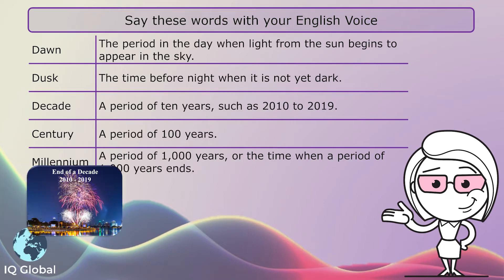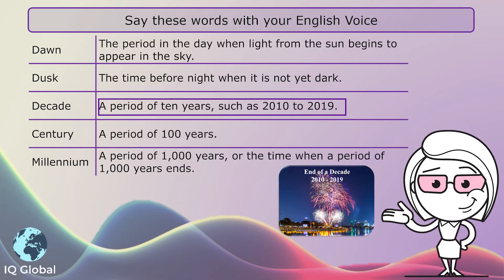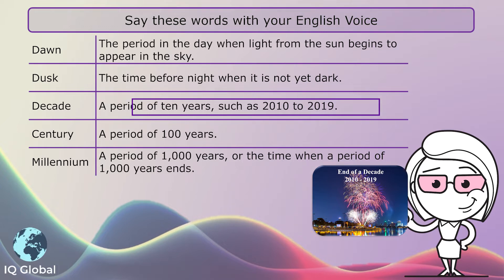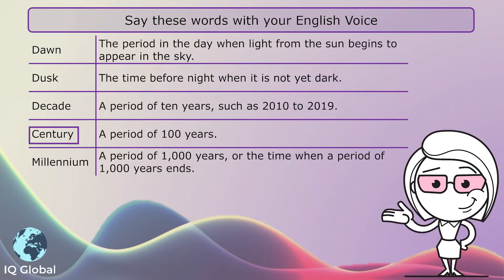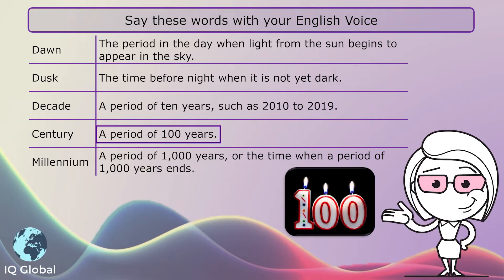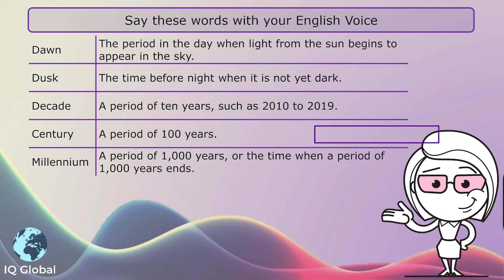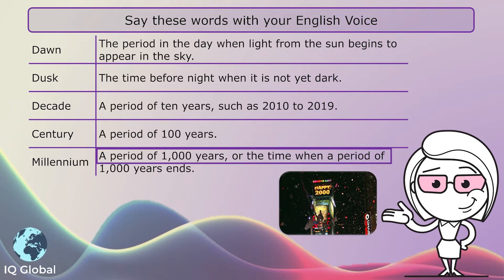Decade: a period of 10 years, such as 2010 to 2019. Century: a period of 100 years. Millennium: a period of 1000 years, or the time when a period of 1000 years ends.